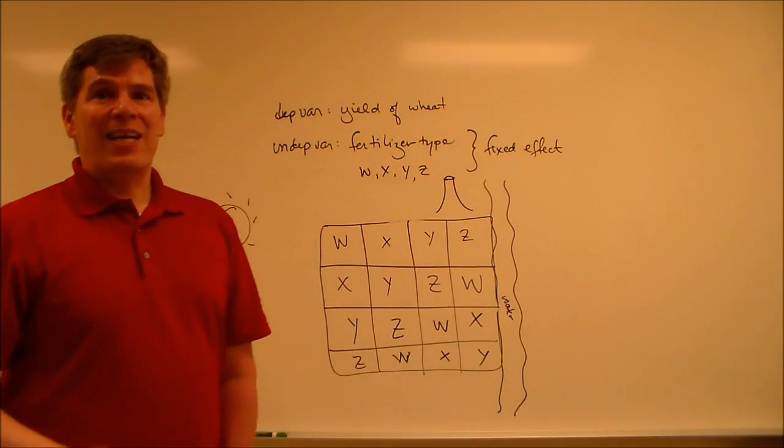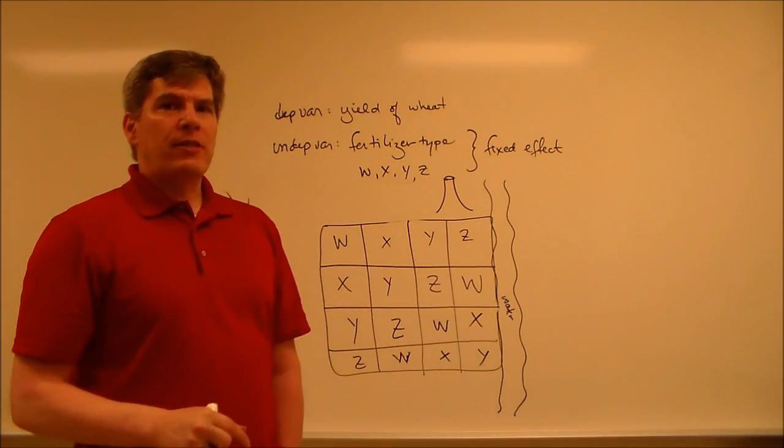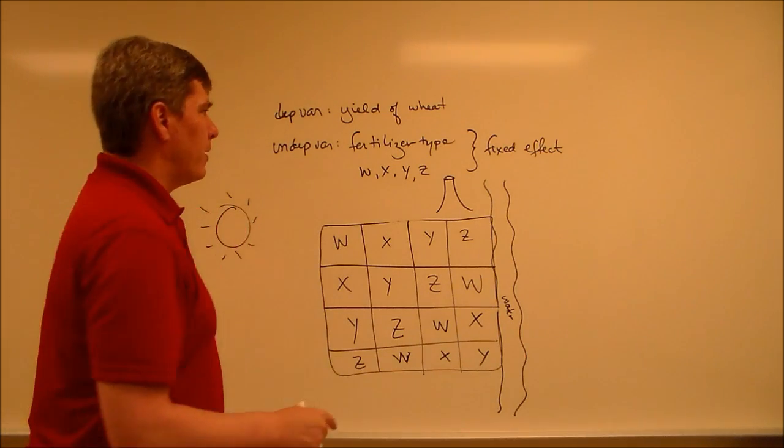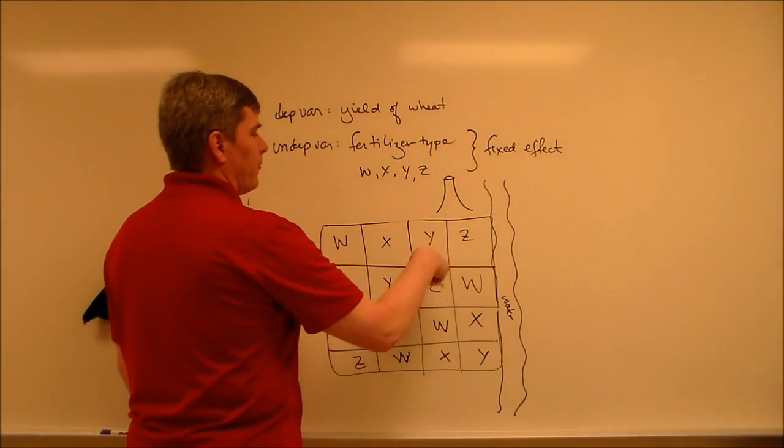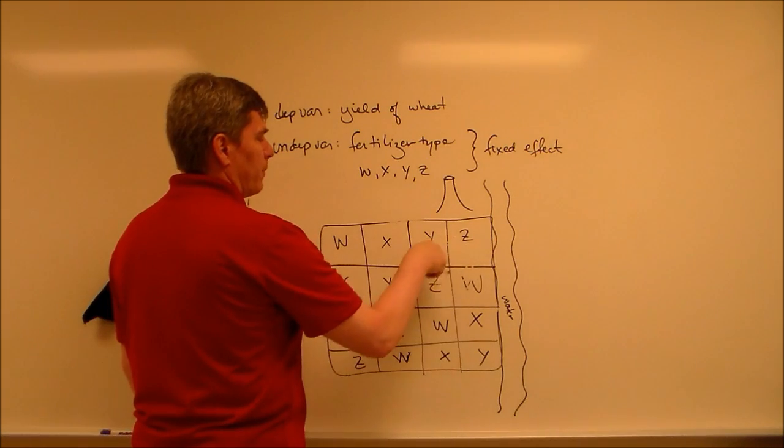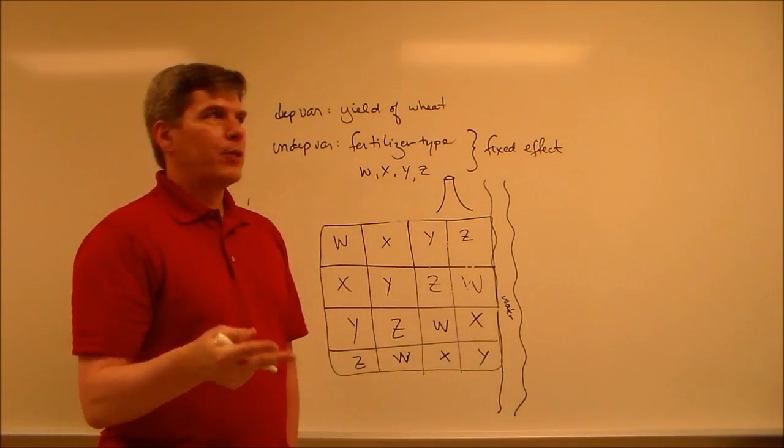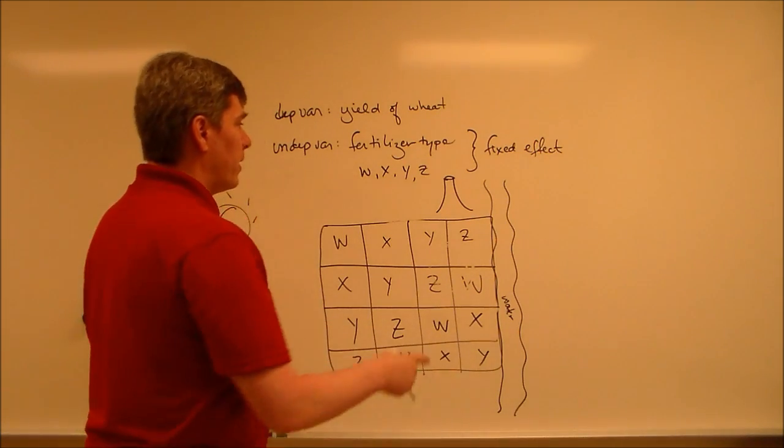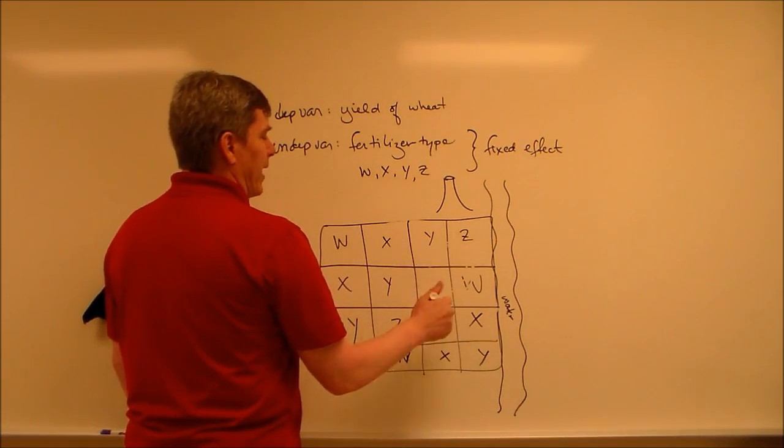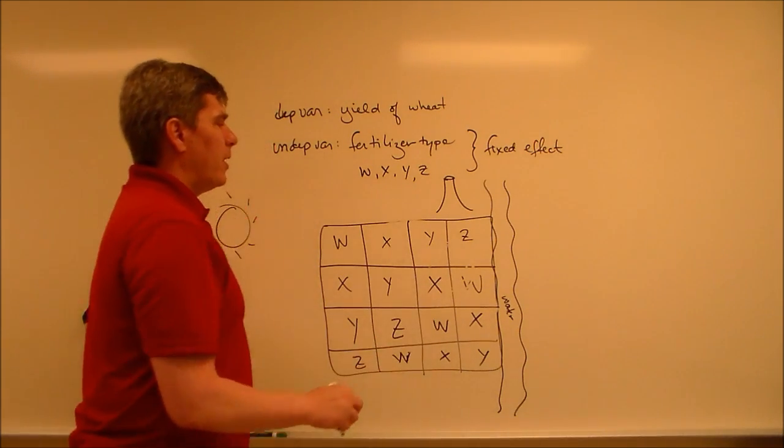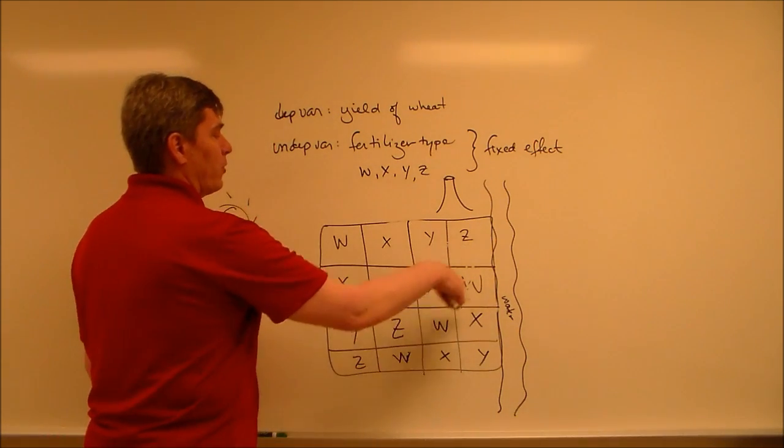Now, because of the way that this is set up, we're going to have to make a change to this basic Latin square design. This volcano is affecting these four plots. So we're going to have to make sure there's an X, a Y, a W, and a Z in each of those four. We've got two Z's, so let's change this up to be an X.